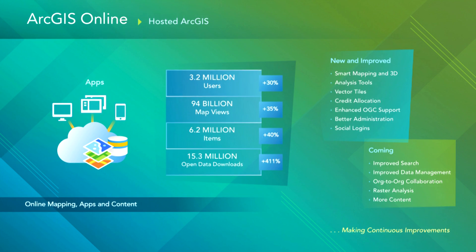We've got some new and improved features: smart mapping in 3D, new analysis tools, vector tiles, and other things. And we've got more coming — improved search, improved data management, org-to-org collaboration, raster analysis, and other features that will continue to come with new releases of ArcGIS Online.